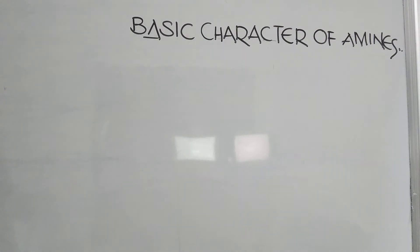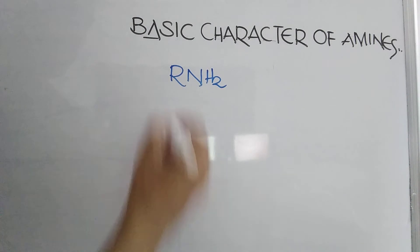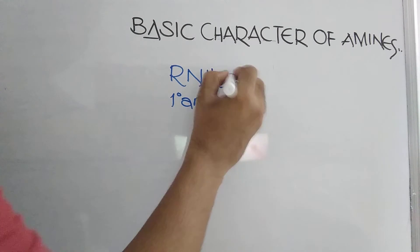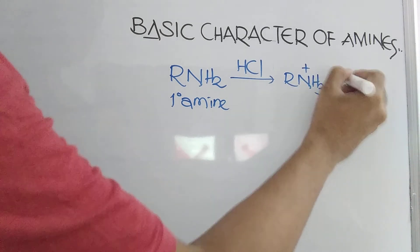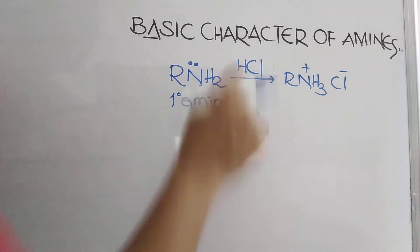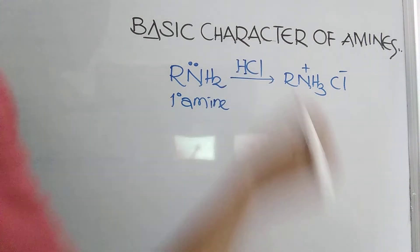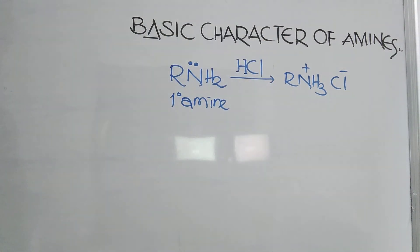The basic character of amines is a very interesting and important topic. When a primary amine is treated with an acid like HCl, it becomes R-NH3+ Cl−. Nitrogen has a lone pair of electrons which it donates to H+, so it functions as a base. We are going to discuss the basic character of amines — how it is explained and what factors affect it.